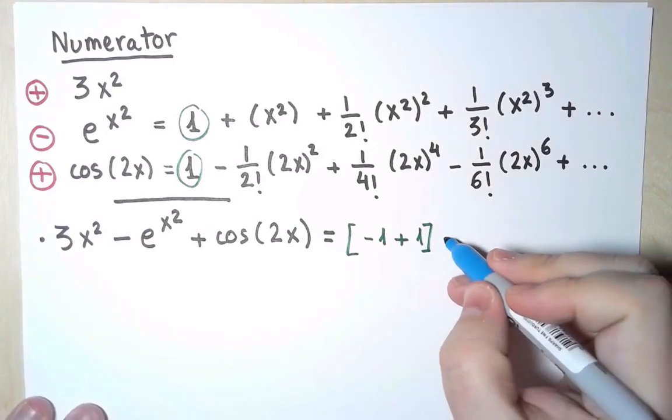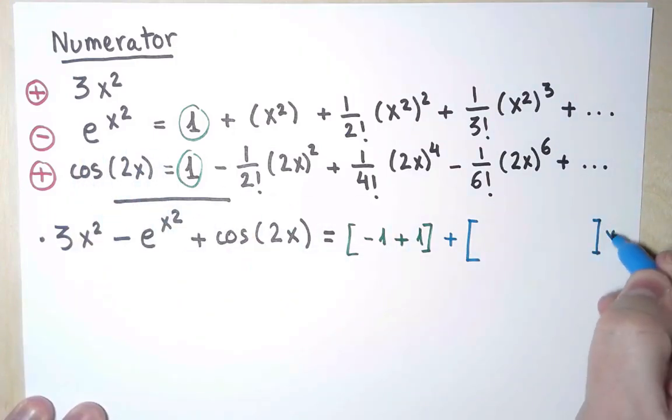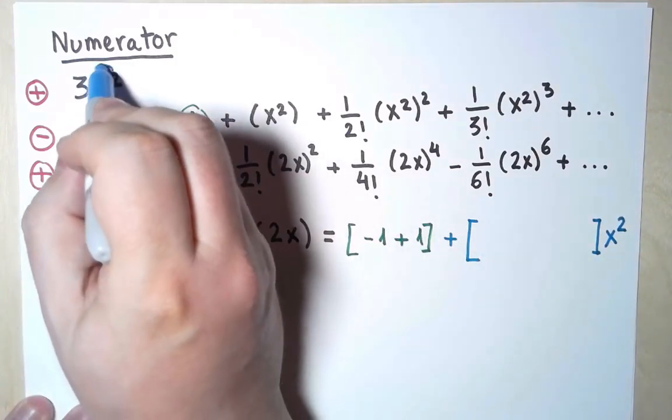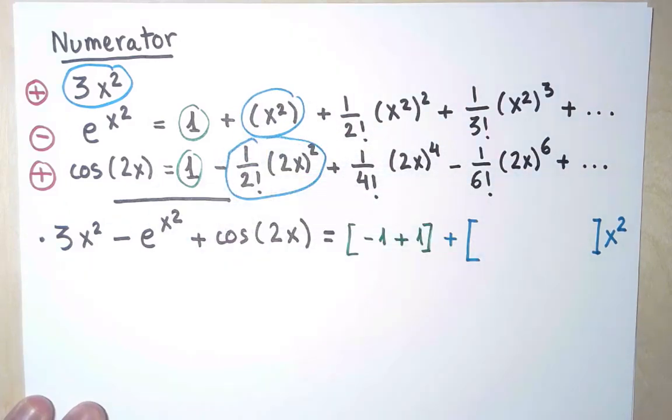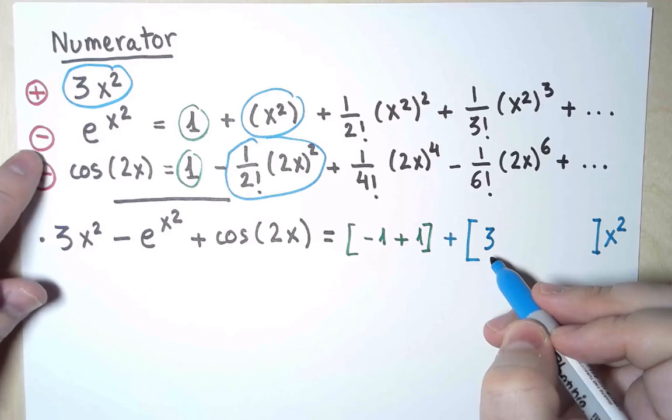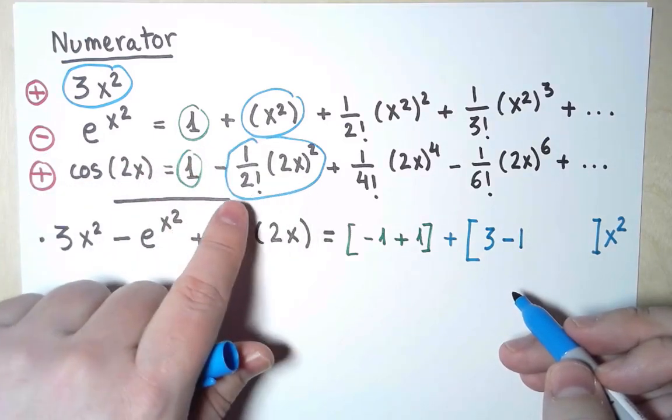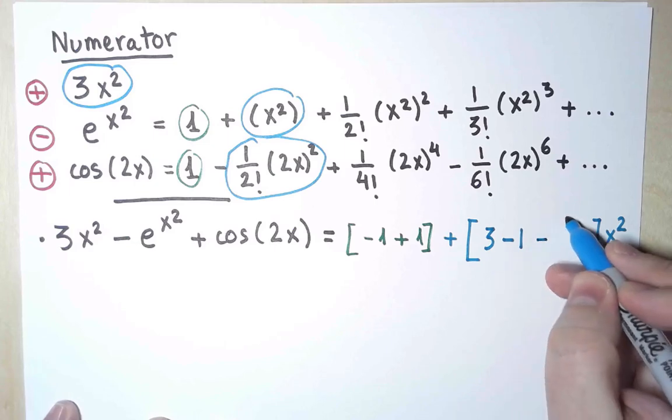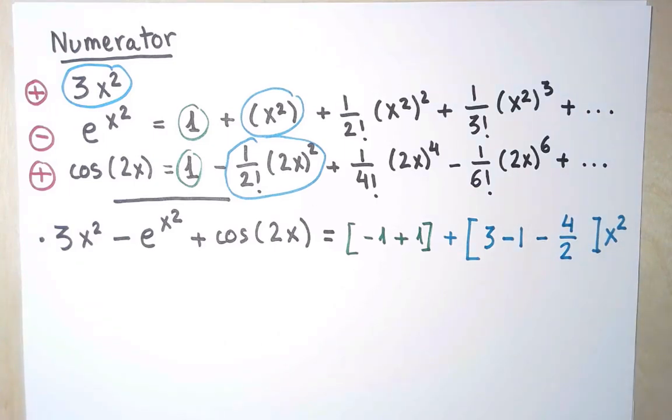Well, I will look next at the next smallest term, and I see x². And I have three terms with x². This one, this one, and this one. And the coefficients are 3 in here, minus 1, plus minus 4 over 2. So that's 3, minus 1, minus 2. That's also 0. This term also cancels. So I need to keep going.